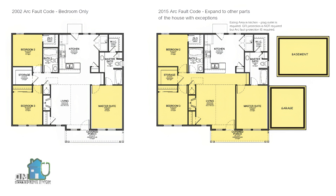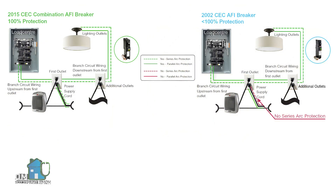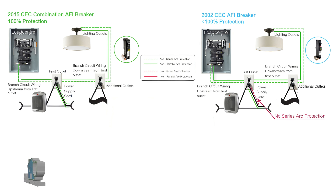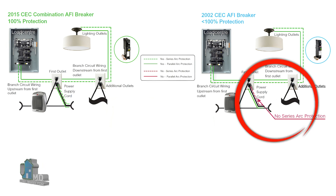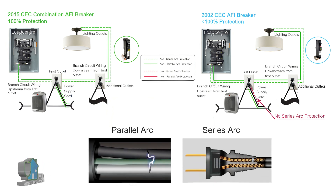A combination arc fault breaker is not an arc and people-protection ground fault breaker in one — that was confusing because such a breaker did exist but was called a dual function breaker. The main difference between the 2002 and 2015 versions is that the 2002 arc fault breaker did not protect the entire circuit, with no series protection beyond the outlet.